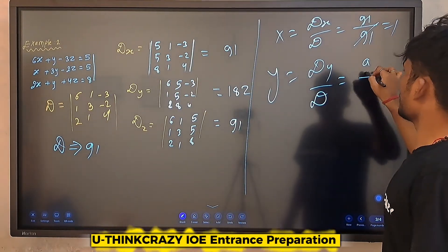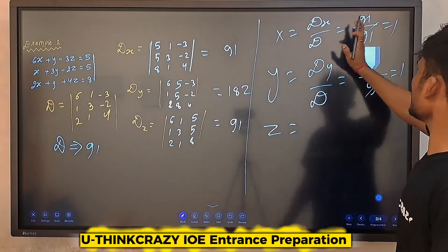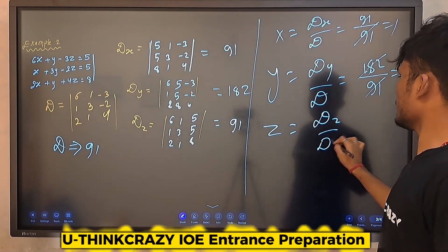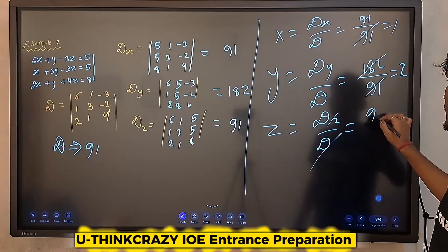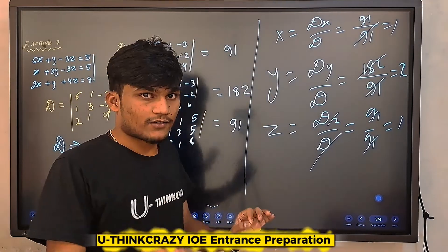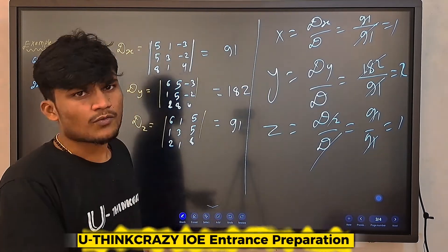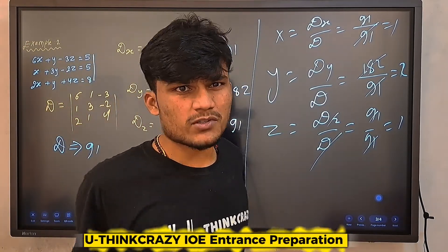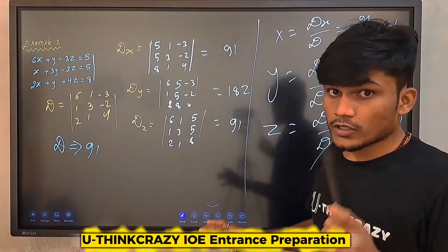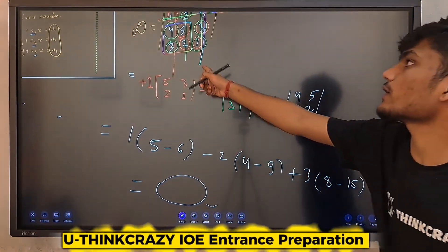No problem. z is 2. 182. Dz divided by D — d, d, d. So this is known as Cramer's Rule. This is the process. I have explained how to find the determinant.